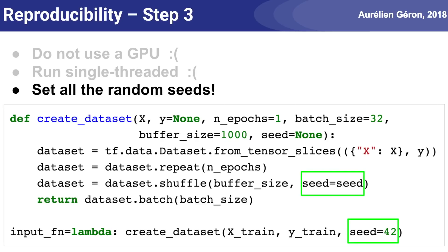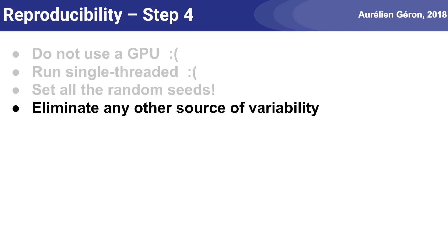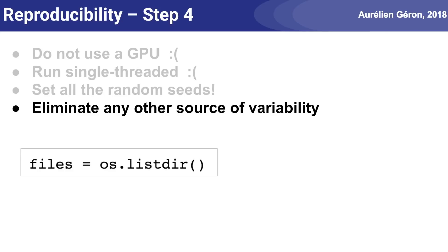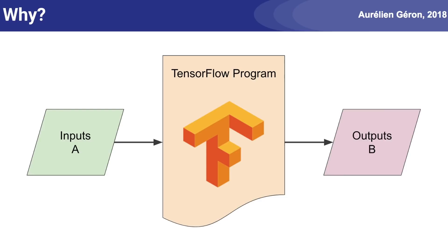You can pause the video if you want to take a closer look. Finally, Step 4: make sure you eliminate any other source of variability in your program. For example, if you read files from disk, make sure their contents are always the same, but also make sure you always use them in the same order. The listdir function returns files in an order that depends on how they are indexed on the file system, so you should sort this list before you use it. And that's about it — we've gotten rid of the main sources of variability. In general, this will be sufficient to make your TensorFlow programs perfectly reproducible. But since it will only run on a single thread on the CPU, it's probably going to be much slower.